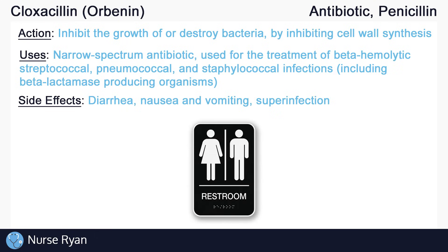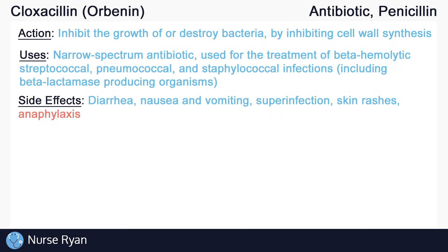Antibiotic-associated diarrhea, which is usually three or more loose, watery stools per day, is common when starting penicillin antibiotics and should improve once the antibiotic is completed. About 1–10% of people report allergic reactions to penicillin, commonly skin rashes, and anaphylactic reactions occur in approximately 0.01–0.05% of clients. Although rare, Cloxacillin may cause a darkened or black tongue, which is harmless and should go away after treatment is complete, so it is important to maintain good oral hygiene.